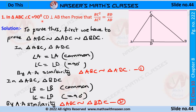In this problem it is given that in triangle ABC, angle C is equal to 90 degrees and CD is perpendicular to AB. Then we have to prove that BC square by AC square is equal to BD by AD.